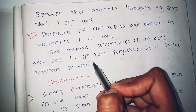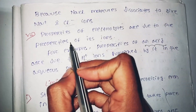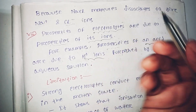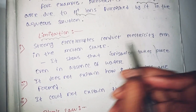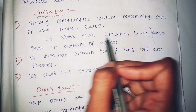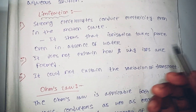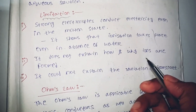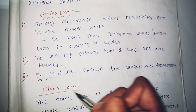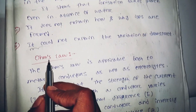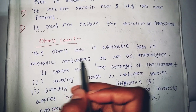An acid in aqueous solution furnishes H⁺ ions, so its properties are due to its ions. Limitations of Arrhenius theory: it does not explain how and why ions are formed; in the molten state, ionization takes place even in the absence of water; and it could not explain the variation of transport number.